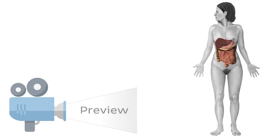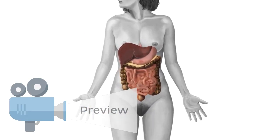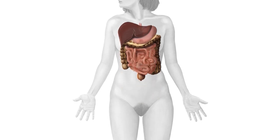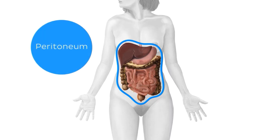You've probably heard that the gastrointestinal tract within your abdomen is several feet long, but have you ever wondered how these loops of intestine don't get tangled or bounce out of control when you run, jump or dance? Fortunately, many of your abdominal organs are held in place by a serous membrane called the peritoneum.